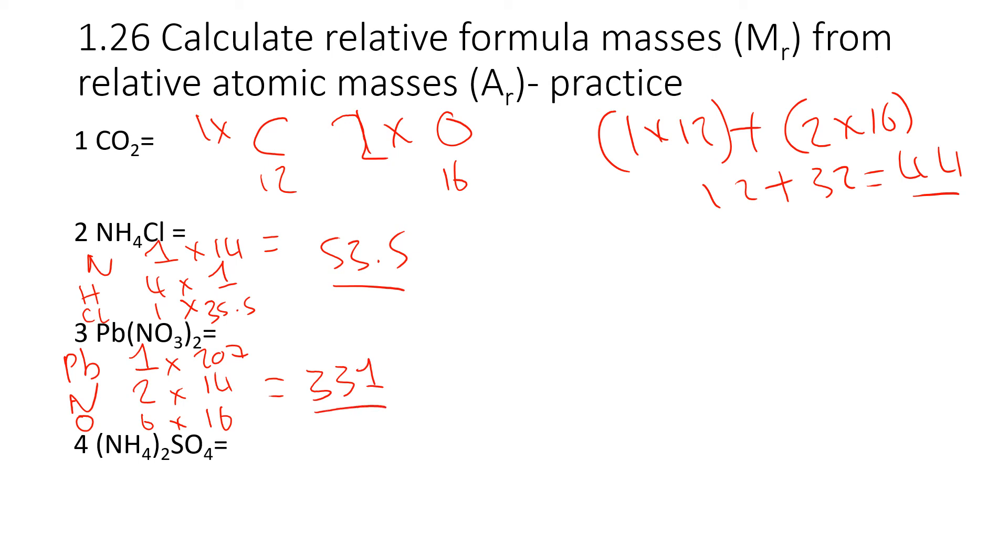Now the last one, ammonium sulfate. We have nitrogen, hydrogen, sulfur, and oxygen. How many nitrogens do we have? Well, the nitrogen is inside the bracket. There's only one of them, but there's a two outside the bracket. So we have two nitrogens. We have four hydrogens inside and two outside. Multiply those together, it gives us eight. We have one sulfur and four oxygens. We'll multiply each one by its mass, and then we can add those all up together to give us the relative formula mass of 132.